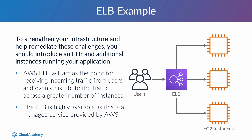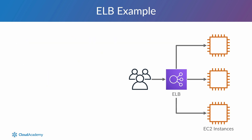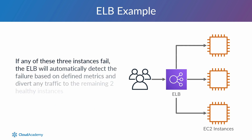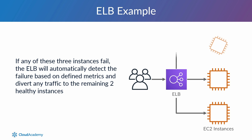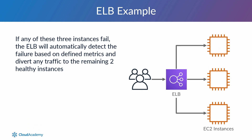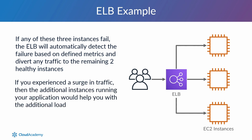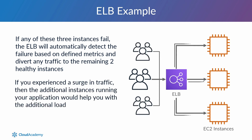Although it might seem the ELB is a single point of failure, the ELB is in fact comprised of multiple instances managed by AWS. In this scenario, we now have three instances running our application. If any of these three instances fail, the ELB will automatically detect the failure based on defined metrics and divert any traffic to the remaining two healthy instances. Also, if you experience a surge in traffic, the additional instances running your application would help with the additional load.